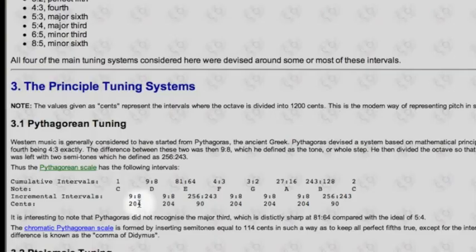We talk about the half-step in equal temperament as being 100 cents as a unit of measurement. So when we talk about equal temperament, we're talking about each half-step as 100 cents, or an octave being 1,200 cents total. If we want to think about how these intervals compare to equal temperament, we can see in this chart that the large major second — the 9:8 ratio major second that emerges in the Pythagorean scale — is a little bit larger, at 204 cents.